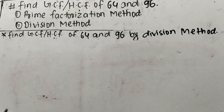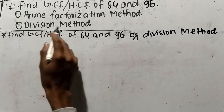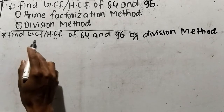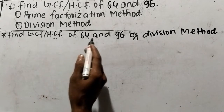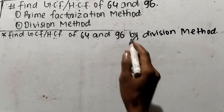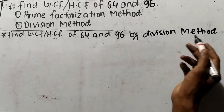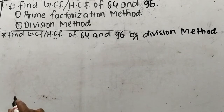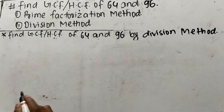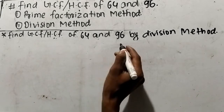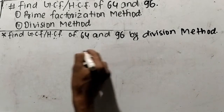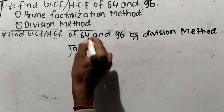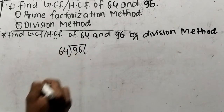Now our second method is by division method. Let's find out GCF or HCF of 64 and 96 by division method. While finding out GCF or HCF by division method, we have to divide the greater number, which is 96, by the lesser number, which is 64.